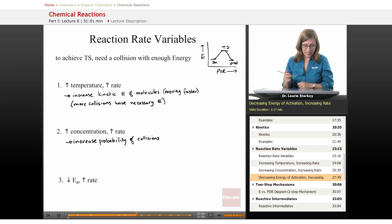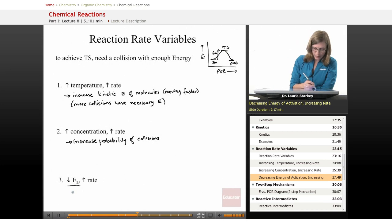And the last way to increase our rate is if somehow we could decrease our energy of activation, that would make it a faster reaction. So where was our energy of activation? It was right here. It was the energy required for our starting materials to reach this transition state energy.